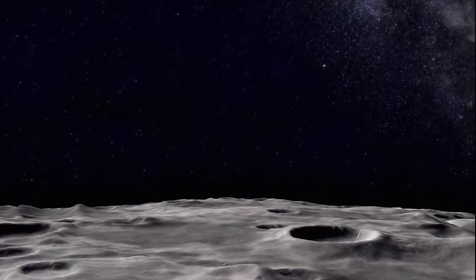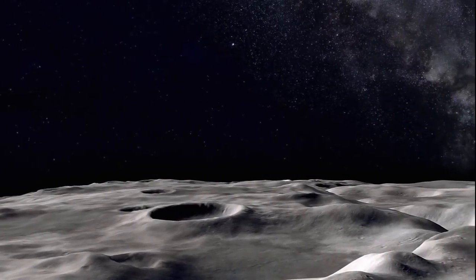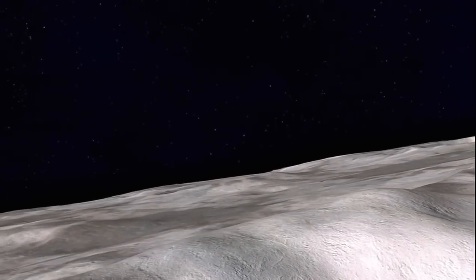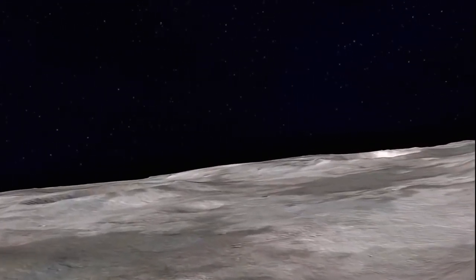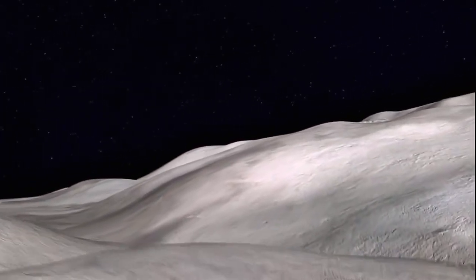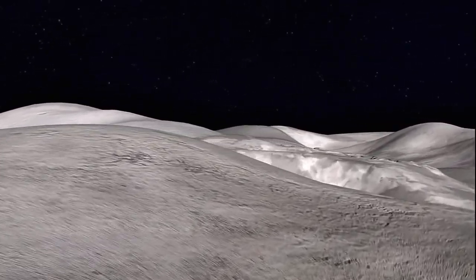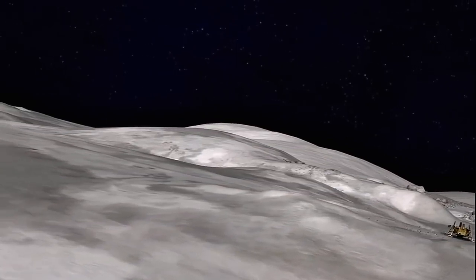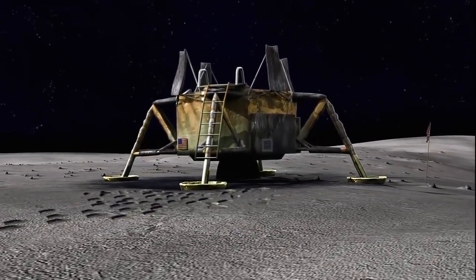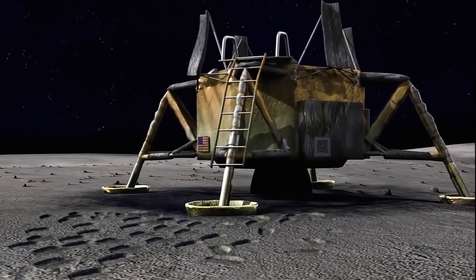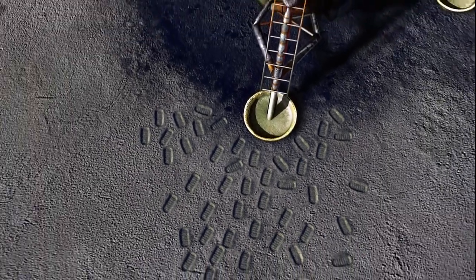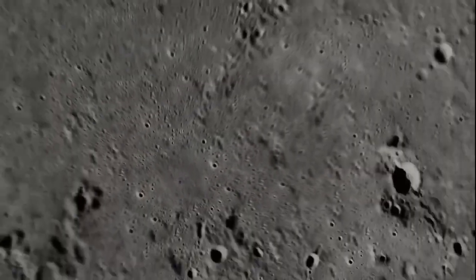Dozens of astronauts have come this way before us. Twelve walked on the moon itself. Just a quarter of a million miles from home. Three days by spacecraft. Barren, desolate. It's like a deserted battlefield. But oddly familiar. So close, we've barely left home. Neil Armstrong's first footprints. Looks like they were made yesterday. There's no air to change them. They could survive for millions of years. Maybe longer than us.